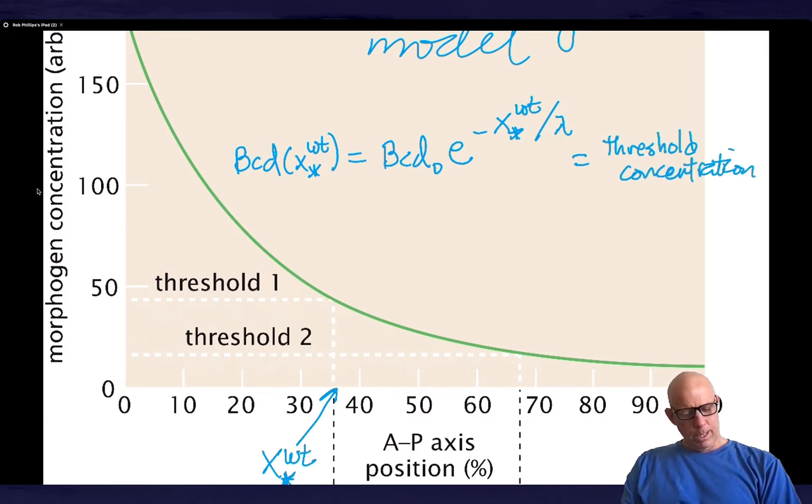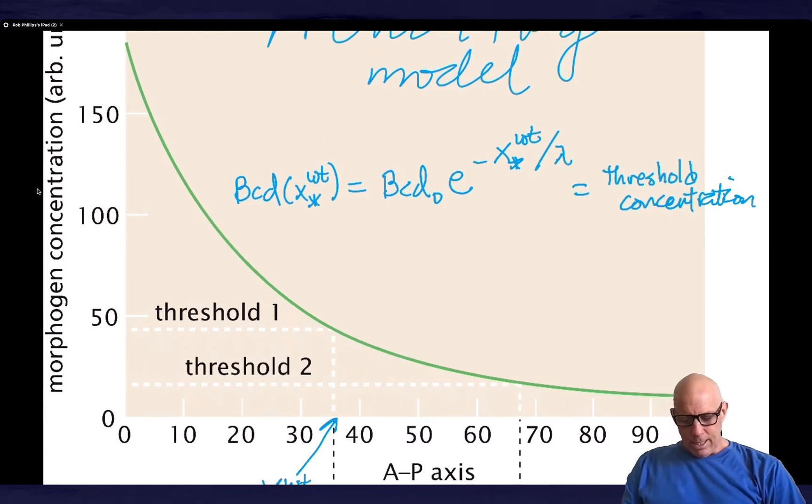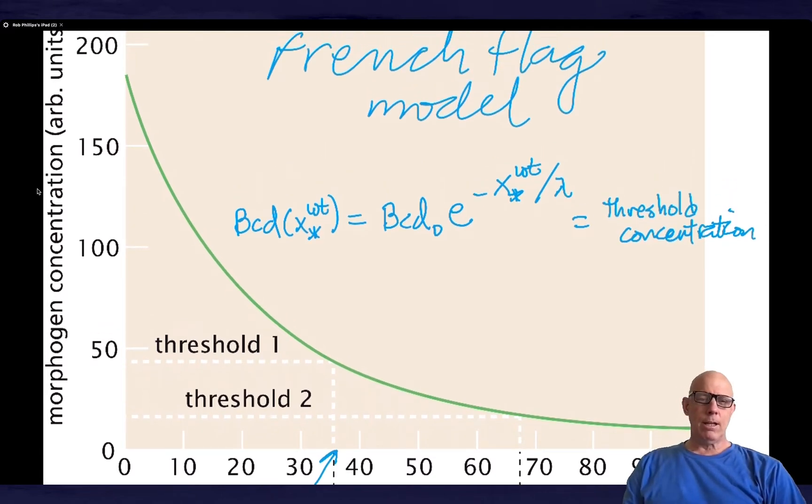So, in a brilliant conception of an experiment, Nüsslein-Volhard and Driever had the idea, well, what if we could change the dosage of the gene, which I'm going to interpret for the purposes of this discussion, as this prefactor? So that's the gene dosage.